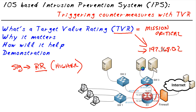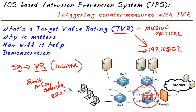We could also set up one last piece called an event action override — and this is where the magic comes in. With the event action override, we could tell the IPS: if the risk rating is equal to or greater than, say, 90, go ahead and add additional actions as countermeasures — deny the packet inline, send a TCP reset, deny future packets from the attacker, and so forth. That's the magic of how setting up a TVR and marking a device as mission critical improves countermeasures against any attacks targeting that specific device.